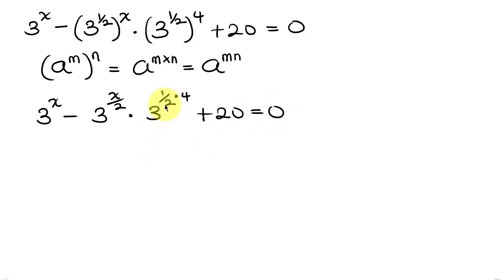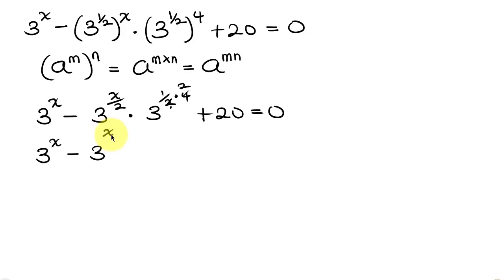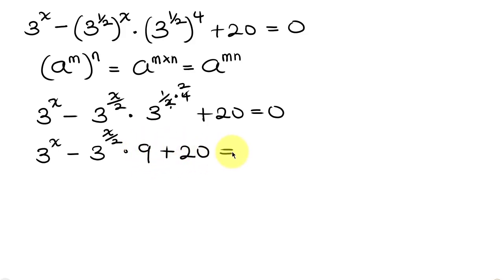You see that 2 divided by 2 is 1, and 4 divided by 2 is 2. So this simplifies into 3 to the x, minus 3 to the x over 2, times 3 squared — which is 9 — plus 20, equal to 0.